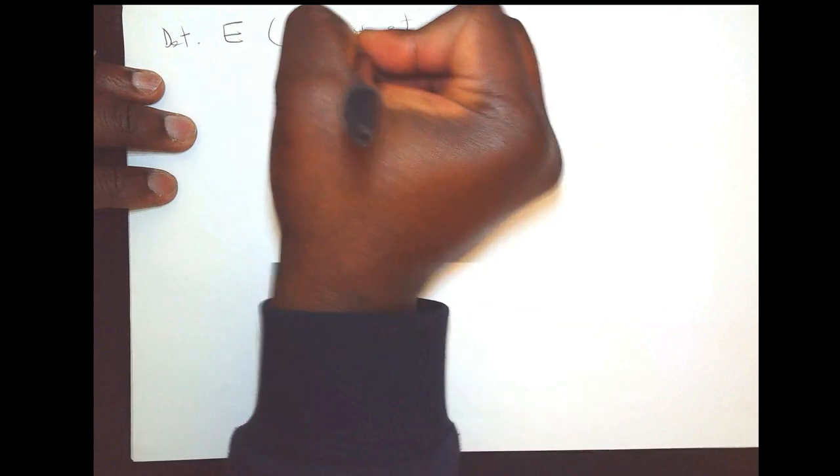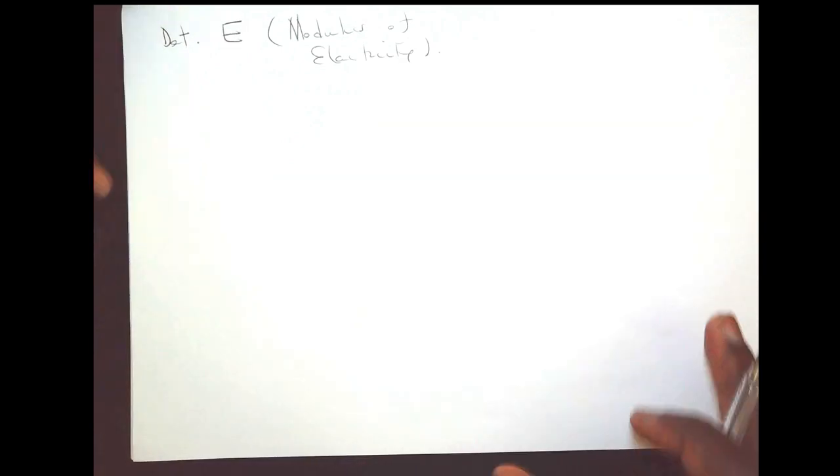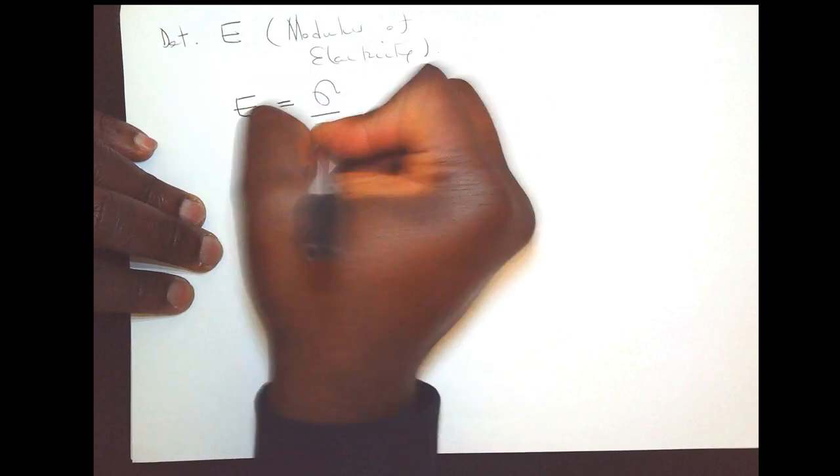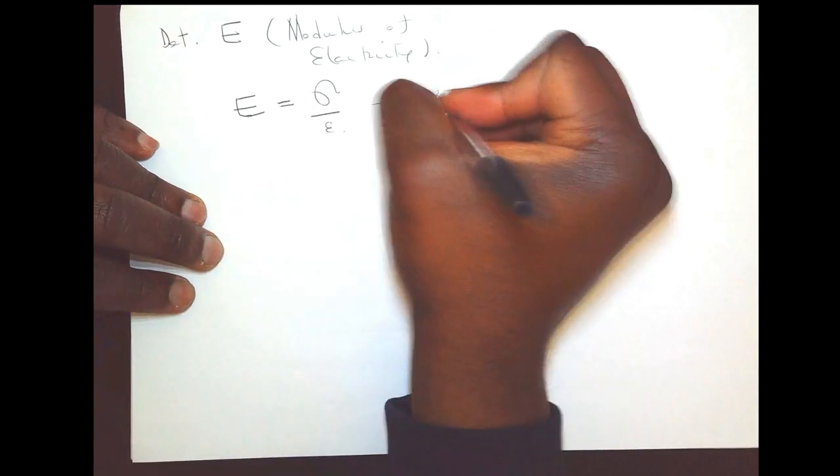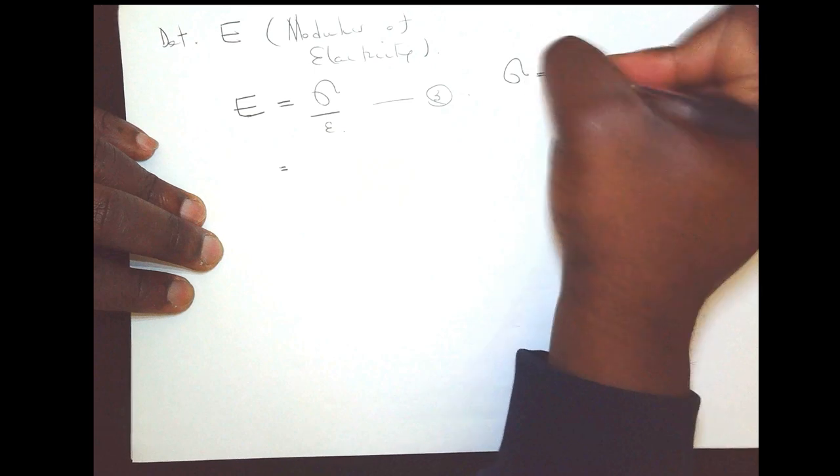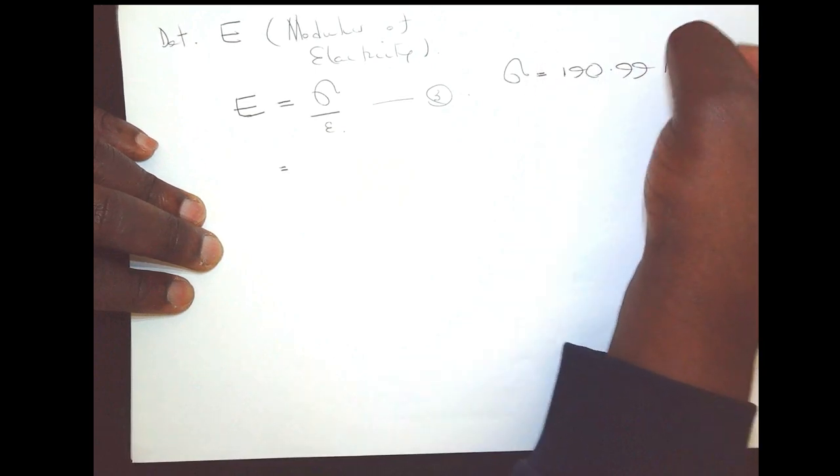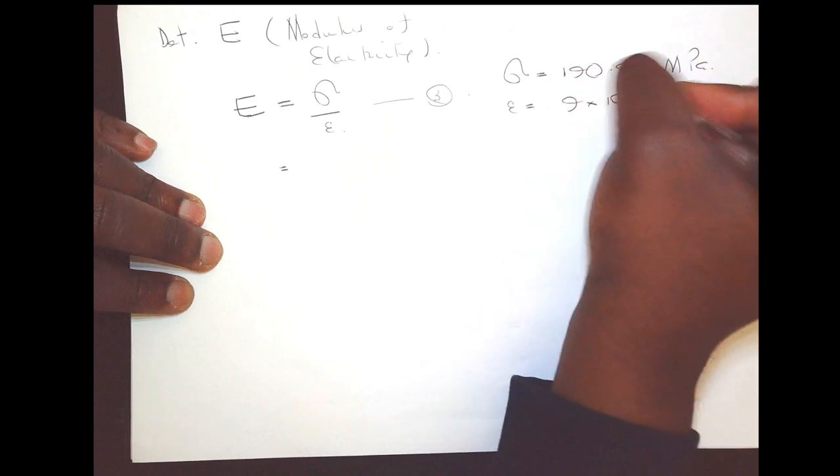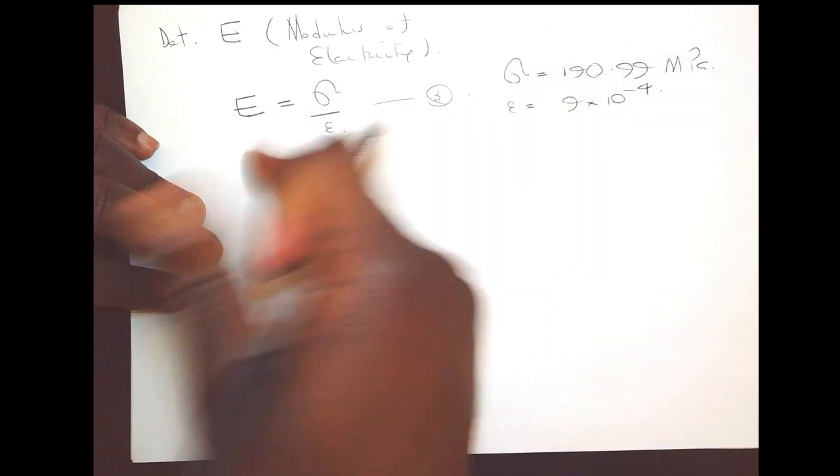So we sorted out problem 1 part I and II. I've been told to calculate or determine the value of E. And E is the modulus of elasticity or the elastic modulus or what is properly known as the Young's modulus. So we know that the Young's modulus E is equal to the ratio of the stress over the strain. So let's call that equation 3, which is equal to the stress as previously calculated, we got 190.99 MPa, and we calculated the strain epsilon to be 9 times 10 to the power minus 4. So we just need to substitute these values into equation 3.